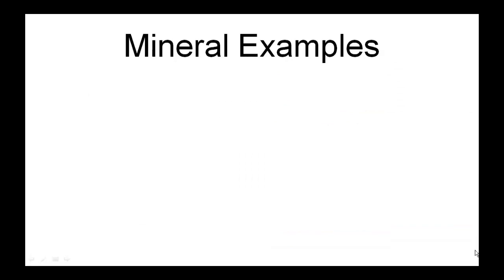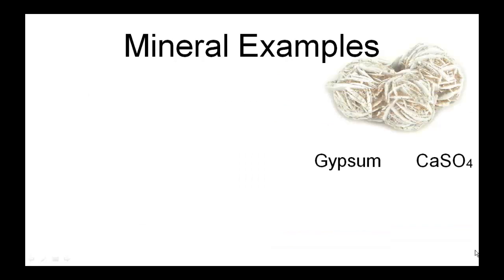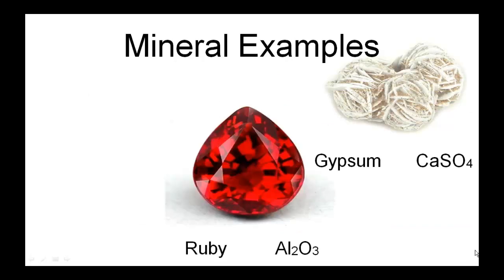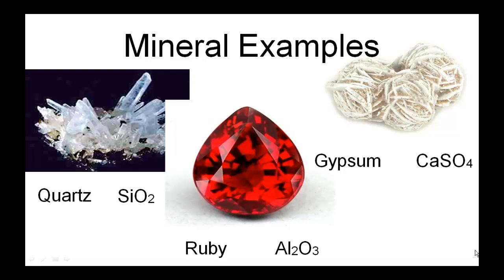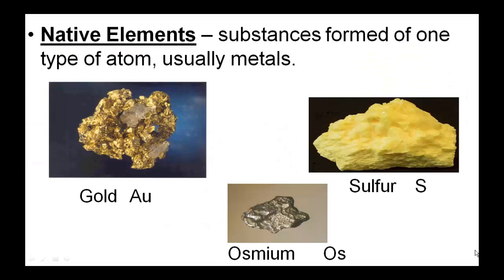Here are some mineral examples you may be familiar with: gypsum, rubies, and quartz — also extremely common, made of silicon and oxygen, two of the most common elements on Earth. Before we go much further, I want to let you know what a native element is. That's a substance formed of one type of atom, usually metals. Sometimes I'll just call them natives. Sulfur is not considered a metal, but gold certainly is.